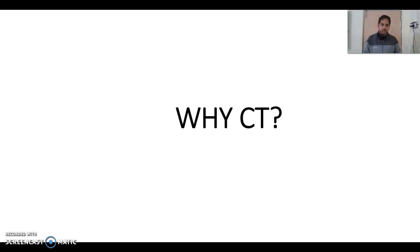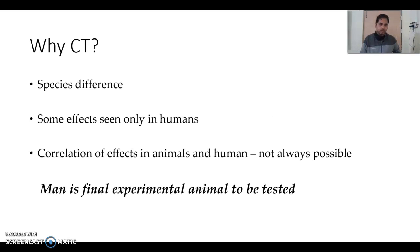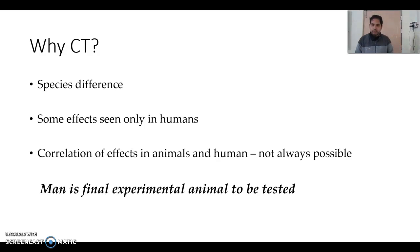The question is: why do we have to test new chemical entities on humans after completing all pre-clinical studies? Why not just test in animals or put the drug directly into the market? The major reason is species difference — there is a difference between animals and humans, and some effects can only be observed in humans. If we put a molecule directly into the market based on animal studies, a large number of people will be affected if the product results in any adverse drug reactions. Also, correlation of effects between animals and humans is not always possible.